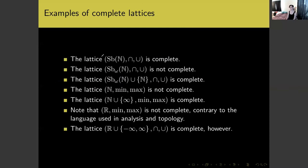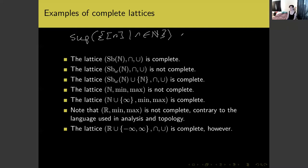Now for some examples. The lattice whose elements are all subsets of the naturals under containment is complete — intersection or union of any collection of subsets of natural numbers yields another subset. The lattice whose elements are only finite subsets of the natural numbers under their usual ordering is not complete, as we saw: the supremum of the set of all initial segments of the naturals does not exist in this lattice.